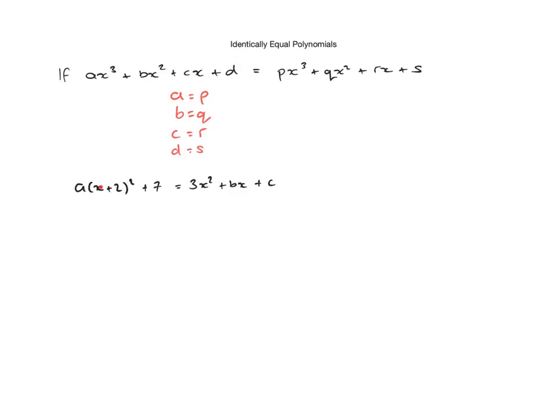Now we have a bracket here that we're going to need to multiply out. And we need to rearrange it so we have x squares, x's and some constants. So the first thing we're going to do is multiply out that bracket.